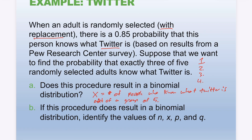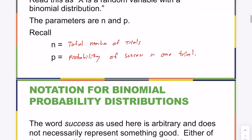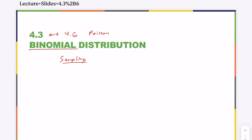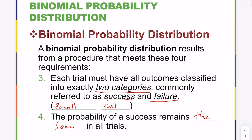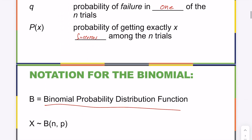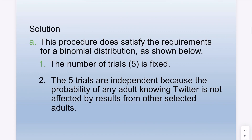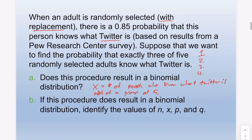There are four conditions that need to be met. Scrolling back up: fixed number, independent, Bernoulli trial, and identically distributed — same probability. The first condition is a fixed number. The trials are selecting one person and determining whether or not they know what Twitter is. Yes, it is a fixed number: n equals five.